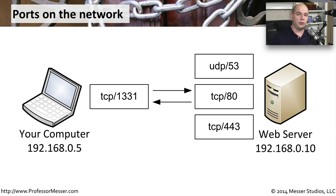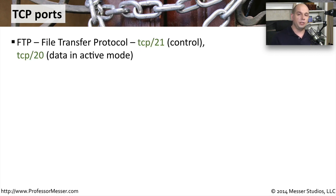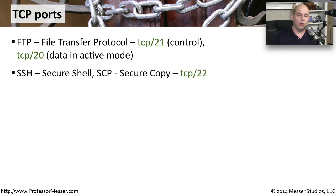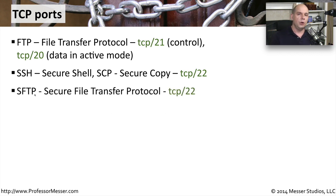For your Security+ exam, you'll need to know some of these well-known port numbers — this tends to be rote memorization, but once you work with firewalls and intrusion prevention, they become second nature. TCP port 20 and 21 are used for the File Transfer Protocol — port 21 is the control protocol and port 20 is for actual data transfer. The encrypted terminal program Secure Shell, or SSH, runs over TCP port 22. This is also used for SCP, which stands for Secure Copy, a simple copy program that uses SSH to transfer data, also over TCP port 22.